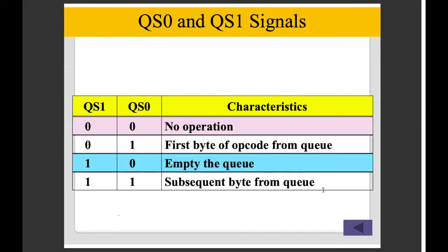If we have instructions, we will take them to the queue via QS0. If QS0 and QS1 are both 0-0, we will check the instructions in the queue. Then we start with the next first byte and decide which instructions generate a signal.